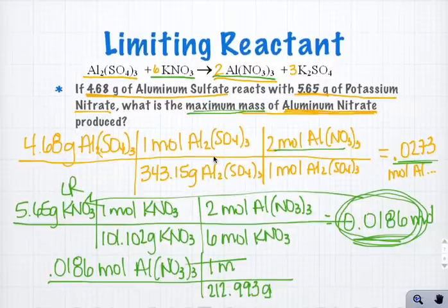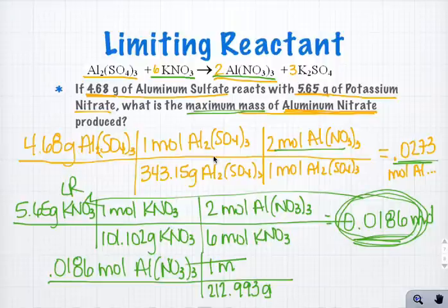I use the molar mass of aluminum nitrate, which is 212.993 for every 1 mole. Oopsie daisy. Oh, I did that backwards. Look at what I just did. Let me fix that real quick.